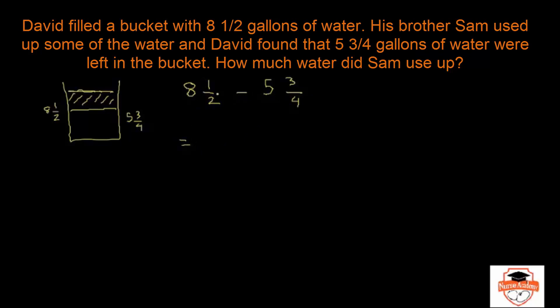These are mixed numbers, so you can subtract 8 minus 5, you get a 3. And now when you try to do 1/2 minus 3/4, there's a problem because 3/4 is larger than 1/2. Remember borrowing?